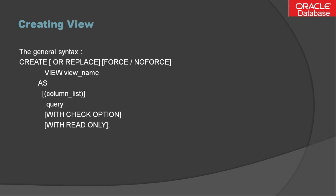Let's discuss how we can create a view. The general syntax is: CREATE OR REPLACE, then optionally FORCE or NO FORCE, then the keyword VIEW followed by the view name, then AS followed by your SELECT query. You can also specify custom column names in a column list. Optional clauses include WITH CHECK OPTION or WITH READ ONLY. CREATE means create a view with the specified name. OR REPLACE means replace the view if it already exists — this is used to change the definition of an existing view.